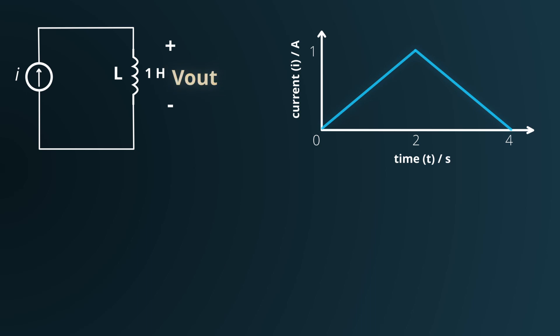Given our understanding of the voltage across an inductor as defined by this equation, let's break down this scenario. From T equals 0 to T equals 2 seconds, the current rises linearly from 0 amp to 1 amp over a 2 second interval. This means the rate of change of current, di/dt, is 1 minus 0 amp over 2 seconds which is equal to 0.5 amps per second.